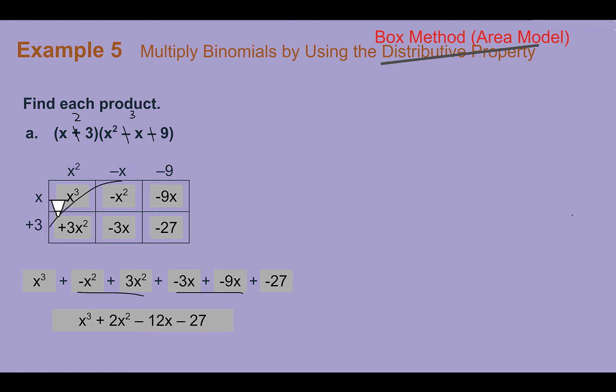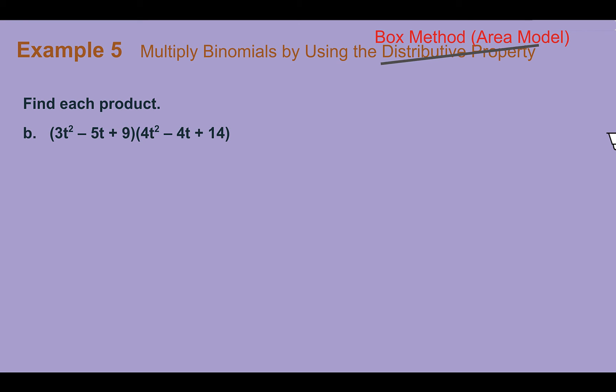Also, one thing I want to point out, the ones that have like terms here are diagonal of each other. So, usually, they're directly diagonal, but if you are missing some terms and you need a placeholder of a 0, they might actually be a little farther apart, but they will still be the same kind of diagonal of each other. But, be careful that you're combining terms that are alike. They have to have the same variable and same exponent.